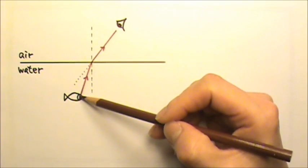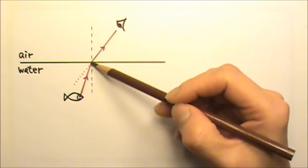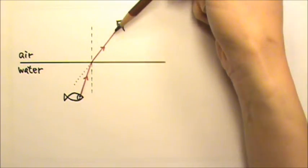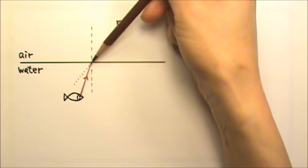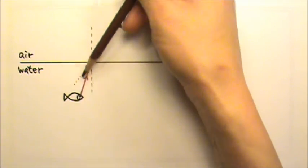If a light ray travels from the fish to the person following this path, this light ray from the person would follow exactly the same path to the fish.